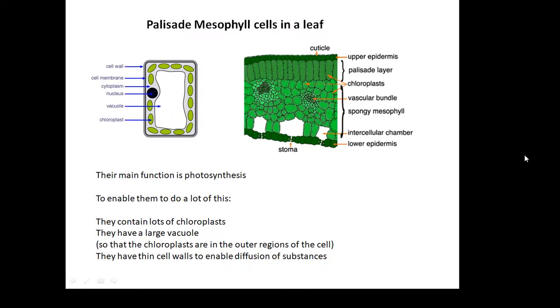First one, palisade mesophyll cells in a leaf. Basically, leaf cells. And their main function is photosynthesis. And to enable them to do this, they contain a lot of chloroplasts because that's where photosynthesis happens.